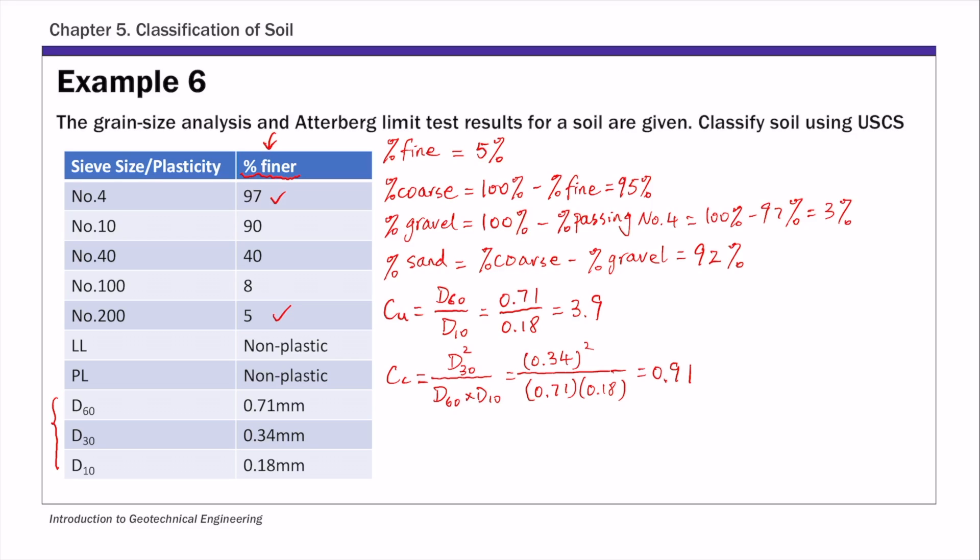And then for LL and PL, instead of giving values, we're given the fact that the soil is non-plastic. So we know that the fine contents of the soil is silt. It's not clay because it's non-plastic.